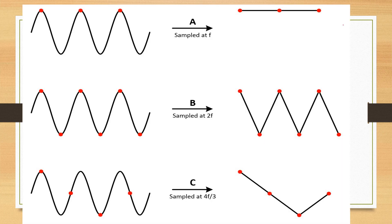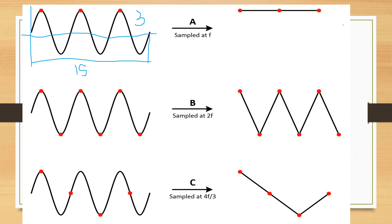Consider a waveform which is the reflected sound wave from the RBCs. This is the reflected sound wave, with the baseline shown here. The duration of this wave is one second, and in that one second there are three waveforms, so the frequency of this wave is three hertz.